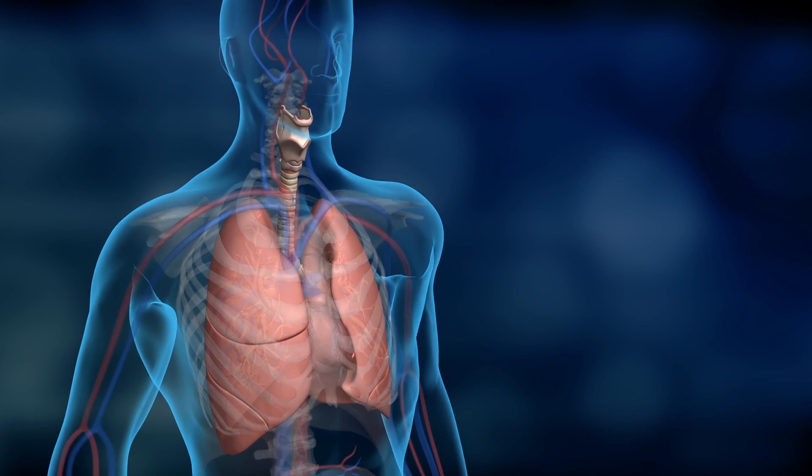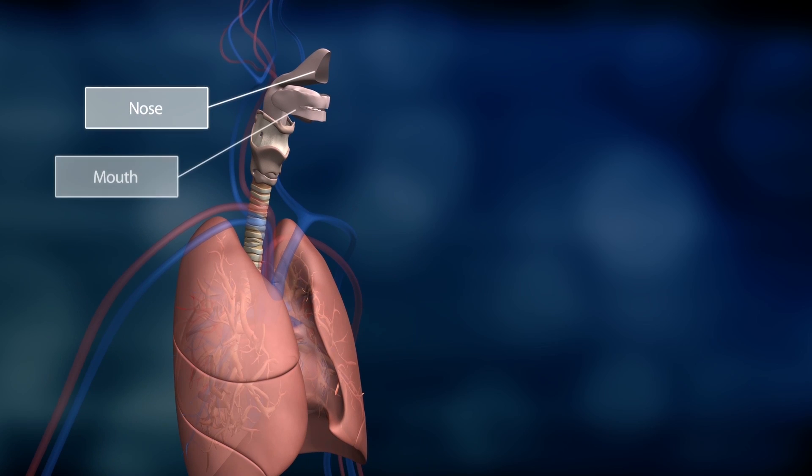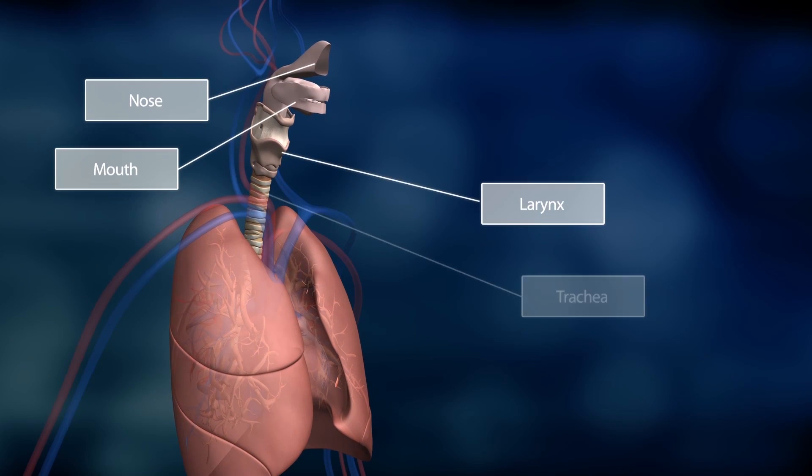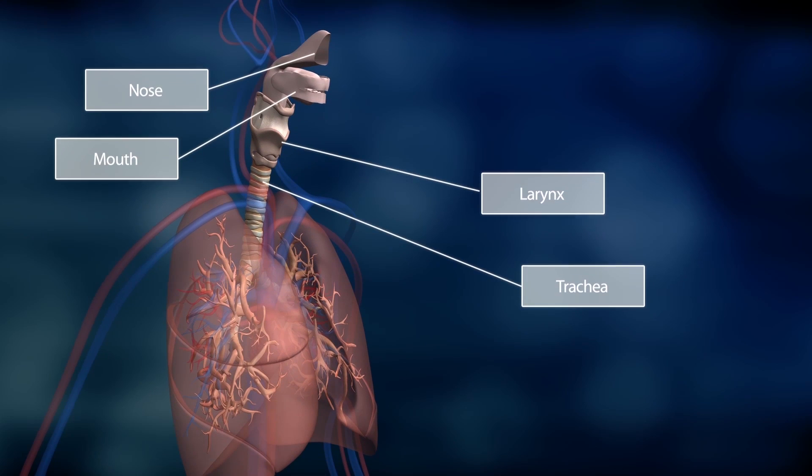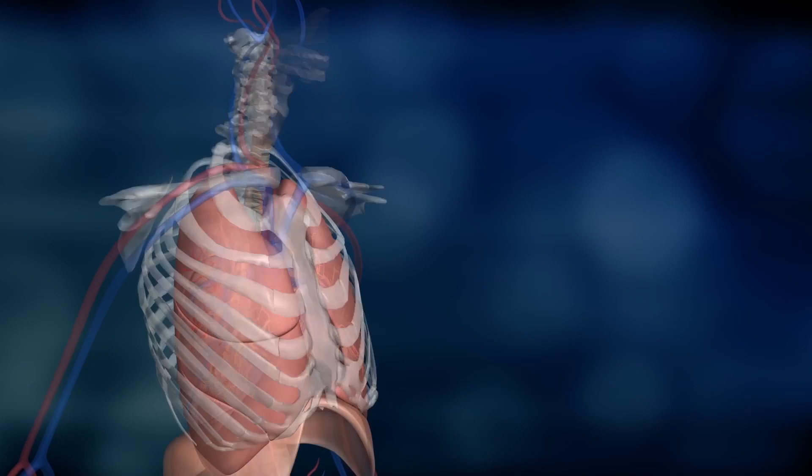Inhaled air follows a long path to the lungs. It flows through the nose and mouth, passes the larynx and trachea, until it finally reaches the bronchial tubes within the lungs. Then it flows all the way back.